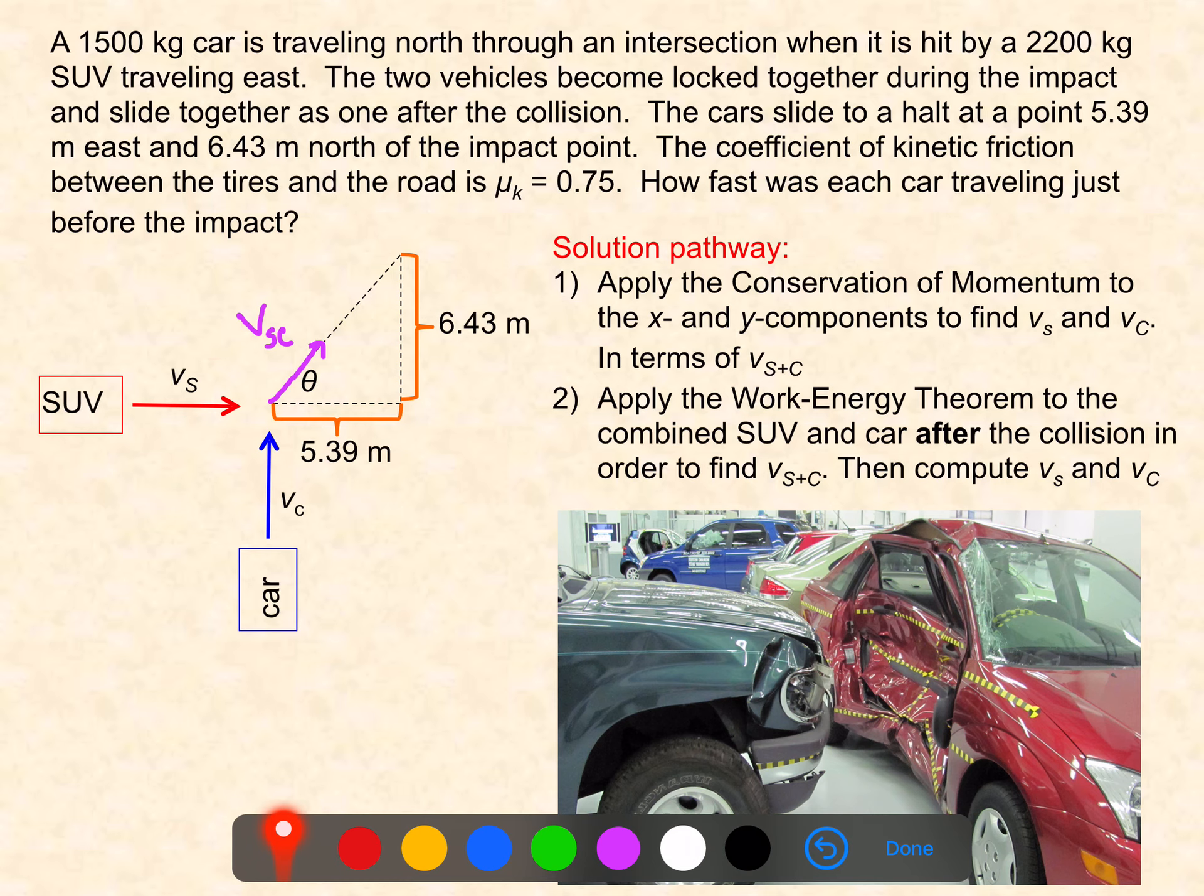Remember that work is equal to the change of kinetic energy. That's what the work energy theorem tells us. This work that's being done is being done by friction, and we have this frictional coefficient here. That work being equated to the change of kinetic energy from whatever speed this is down to zero should help us come up with a third equation that we can use in order to solve for this combined velocity. Once we know that, we can plug it into the other two equations in order to solve for the other two velocities. That's the strategy.